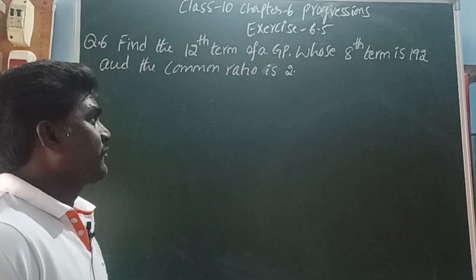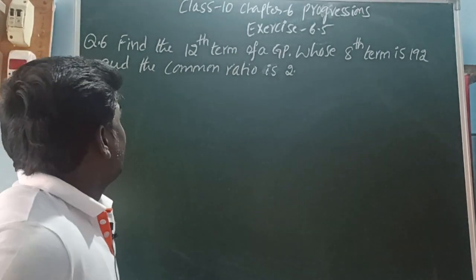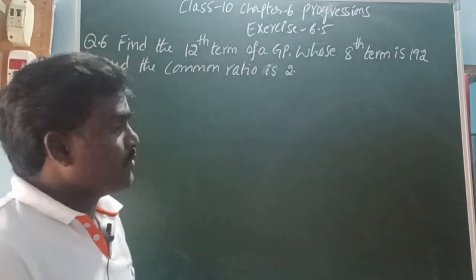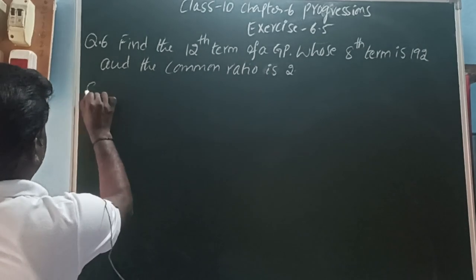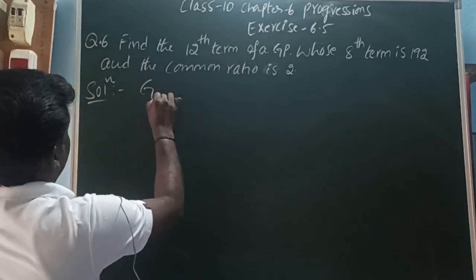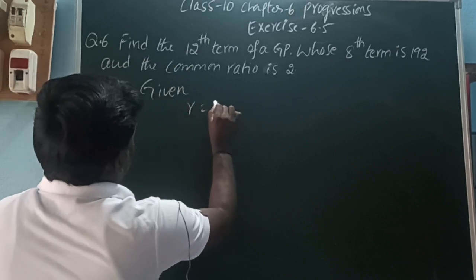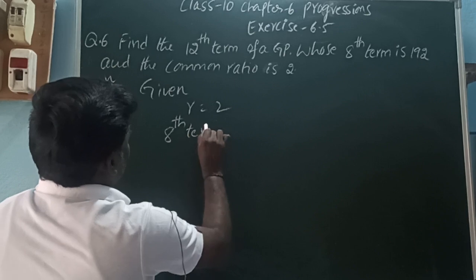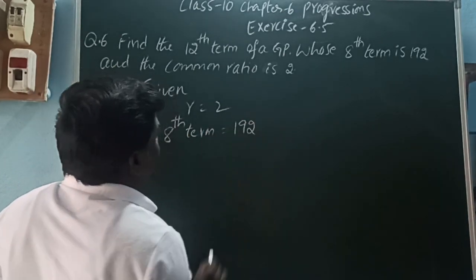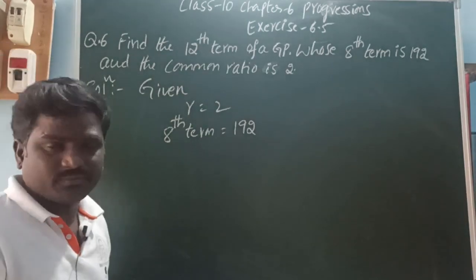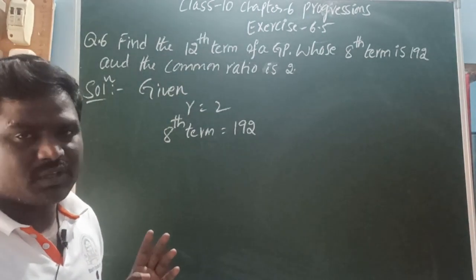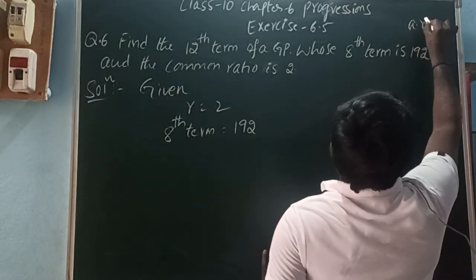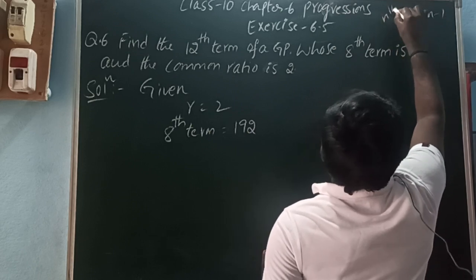Find the 12th term of a GP whose 8th term is 192 and the common ratio is 2. Here they are asking for the 12th term of a GP. Given: common ratio is 2, 8th term is 192. The general form of the nth term of a GP is A into r to the power of n minus 1.